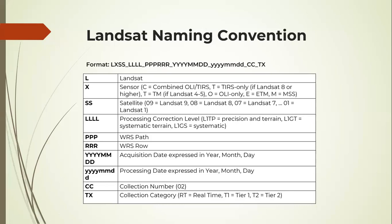Then it will be followed by the path and row, acquisition dates, processing dates, collection number, and the collection category.